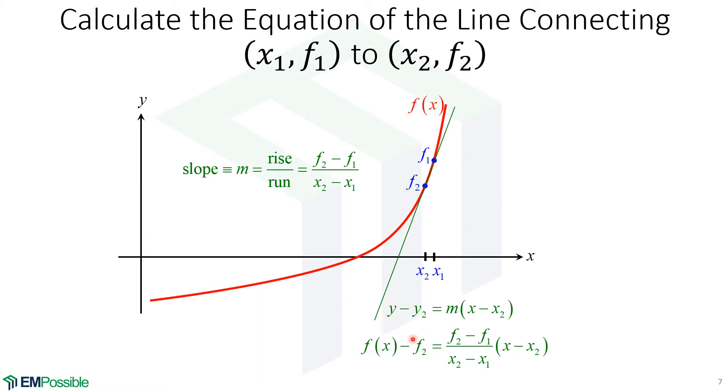So we have the function being evaluated at x. Instead of y2, we have the function evaluated at x2. Our slope, we just calculated f2 minus f1 over x2 minus x1. And then we just have x minus x2. So that's the equation of this line.